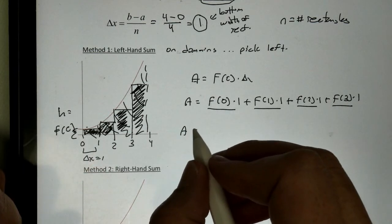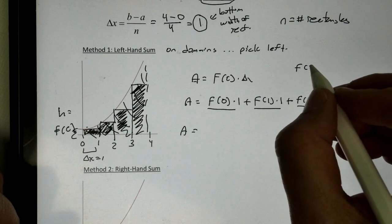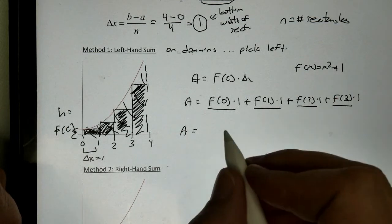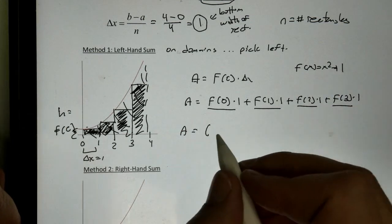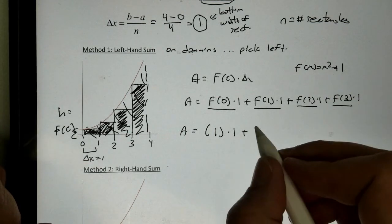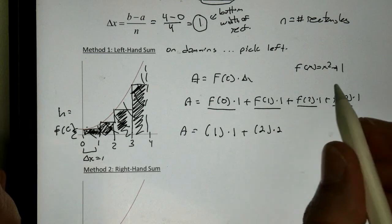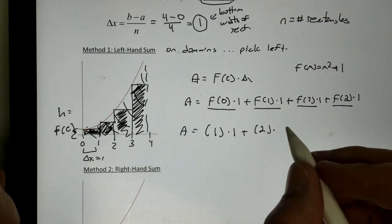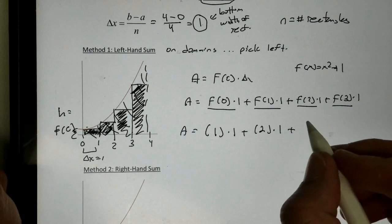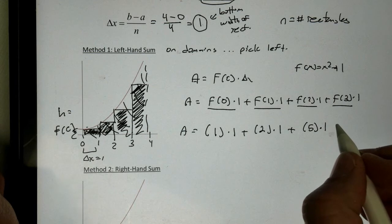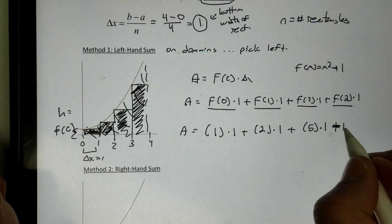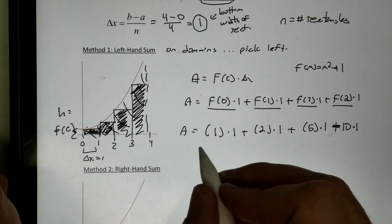And then I just plug them into my function. Remember what f of x was, right? It was x squared plus 1. So, I plug it in. What's f of 0? f of 0 was 1, so this is 1 times 1. f of 1 becomes 2, so we get 2 times 1. Plus, f of 2 becomes 5 times 1. And then f of 3 becomes 10 times 1.